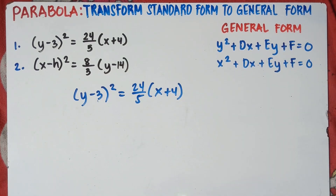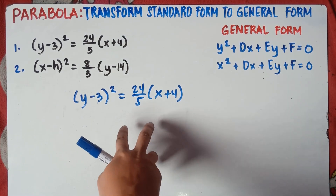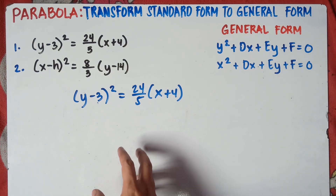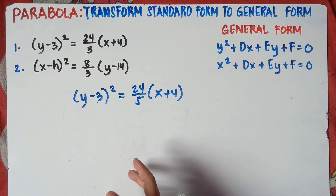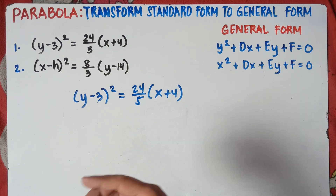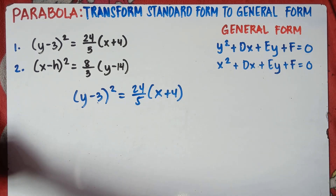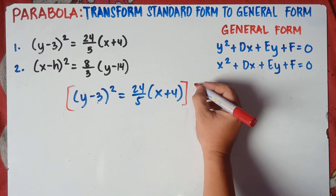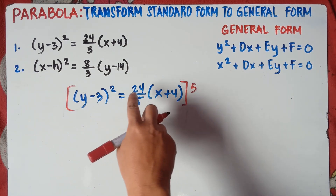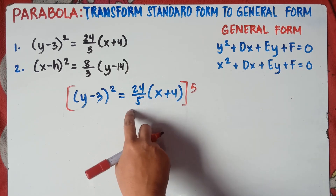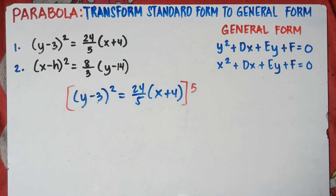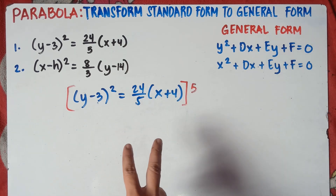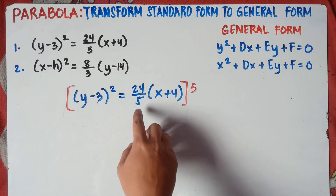If you have this kind of equation, the thing that you will do is remove the denominator. If you're dealing with fractions, it will be complicated if you have denominators. So you simply remove this denominator. To remove it, you just multiply the equation by positive 5 — because 5 multiplied into the fraction will cancel out the denominator. That's the thing you will do: eliminate the denominator.